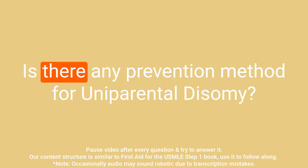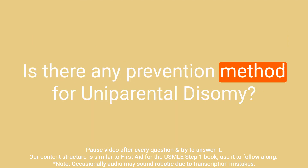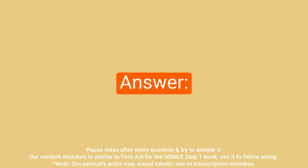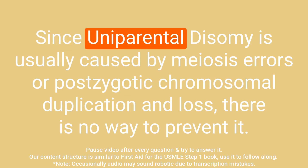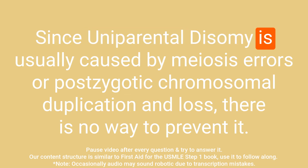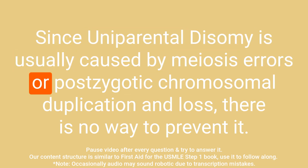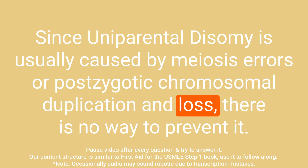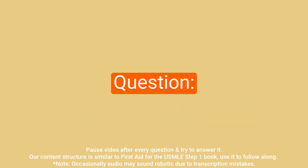Question: Is there any prevention method for uniparental disomy? Answer: Since uniparental disomy is usually caused by meiosis errors or post-zygotic chromosomal duplication and loss, there is no way to prevent it.